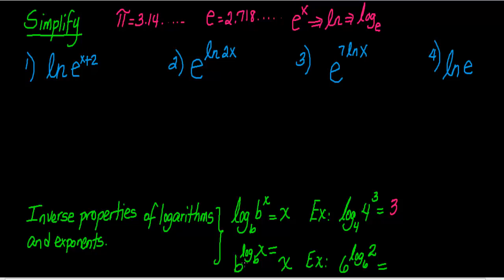The inverse property of exponents applies when you have an exponent that contains a logarithm. As long as the base of your exponential expression is equal to the base of the logarithm, then the whole expression will equal X. For example, 6 raised to the log base 6 of 2 equals 2. These two properties we're going to use for natural log, since natural log follows all the properties of logarithms.